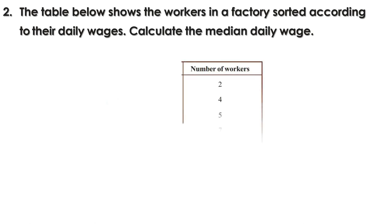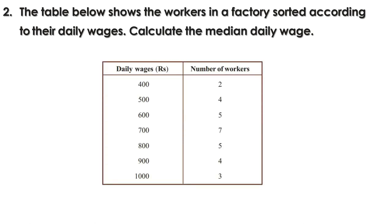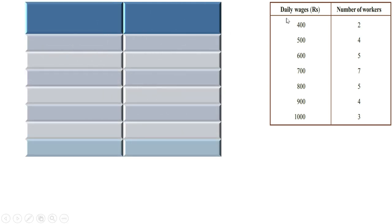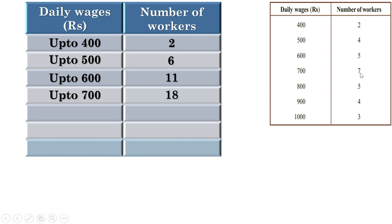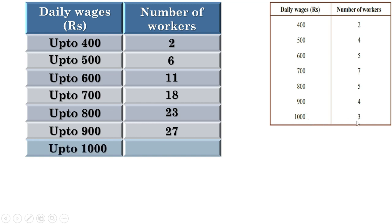Second problem: the table shows workers in a factory sorted according to daily wages. Calculate the median daily wage. Let us prepare a cumulative frequency table with headings daily wages and number of workers. Up to 400, there are 2 workers. Up to 500, there are 2 plus 4, or 6 workers. Up to 600, there are 6 plus 5, or 11 workers. Up to 700, there are 11 plus 7, or 18 workers.